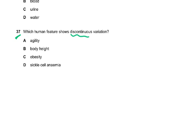Question number 37: which human feature shows discontinuous variation? Discontinuous variation means either two, three, or four distinct types — like blood groups, which have four types, or tongue rolling. Agility, body height, and obesity are all continuous — very variable with many intermediate values. The answer is D: sickle cell anaemia.